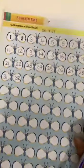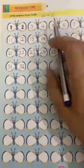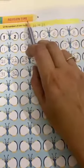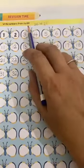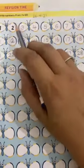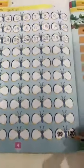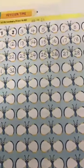We will open page number 4. On page number 4, it is revision time. Yes, we are going to revise forward counting numbers 1 to 100.